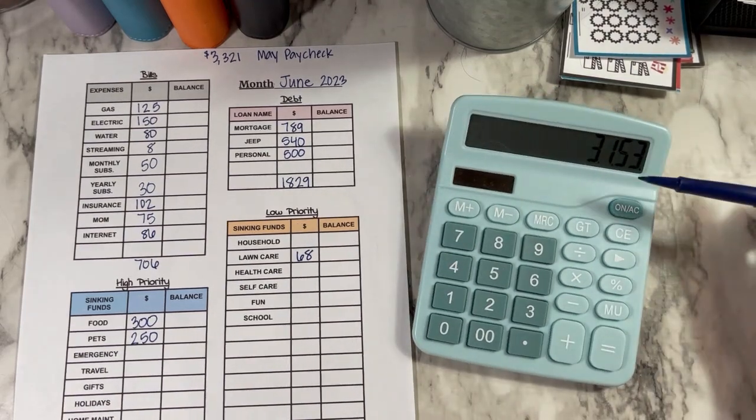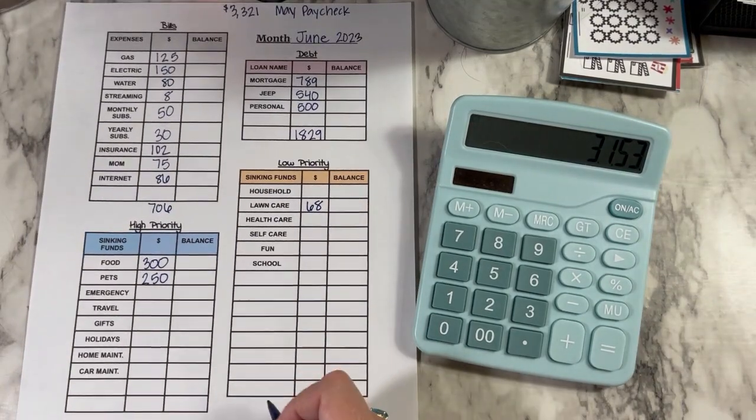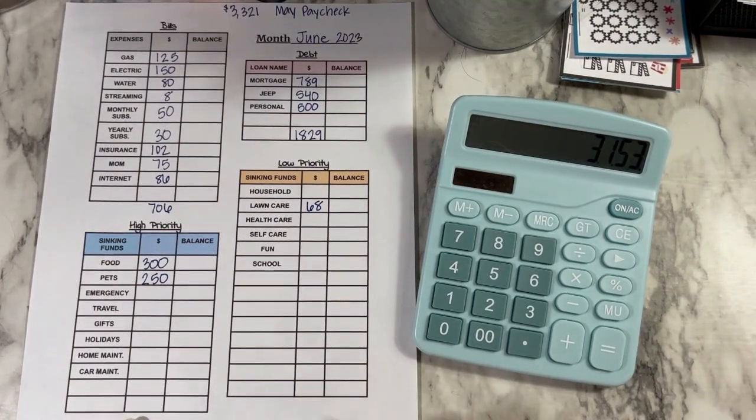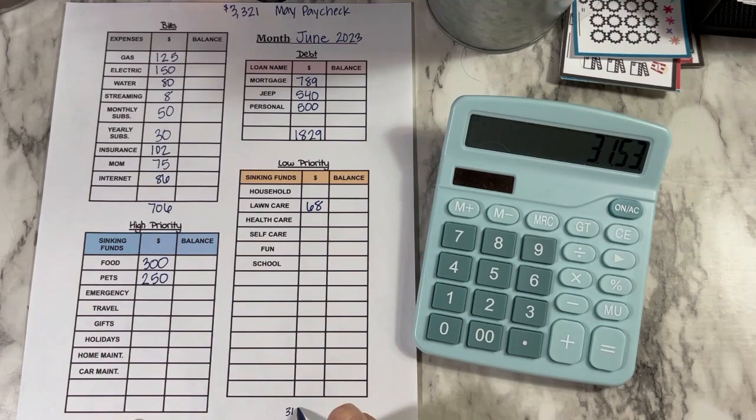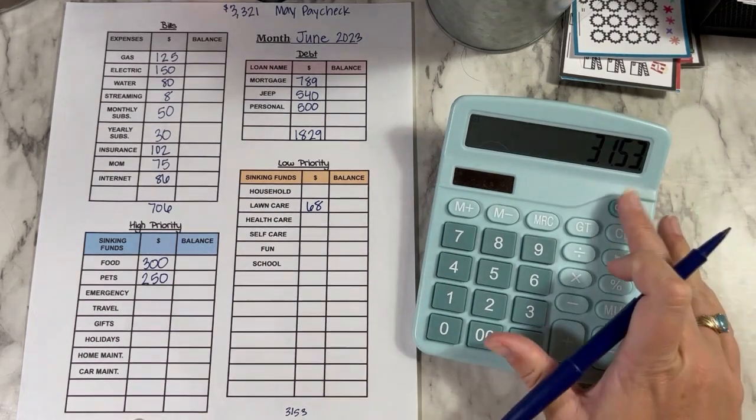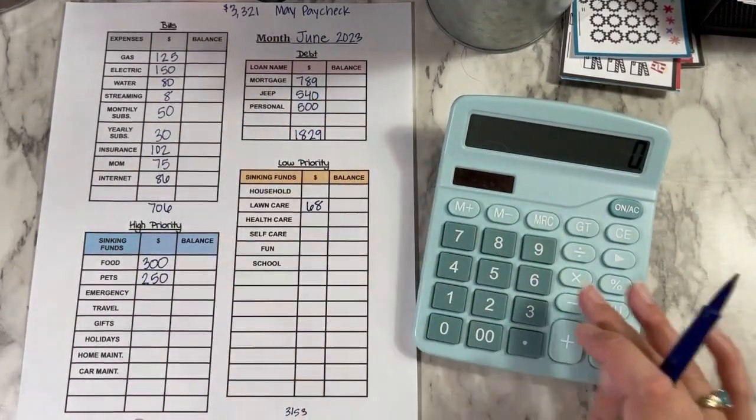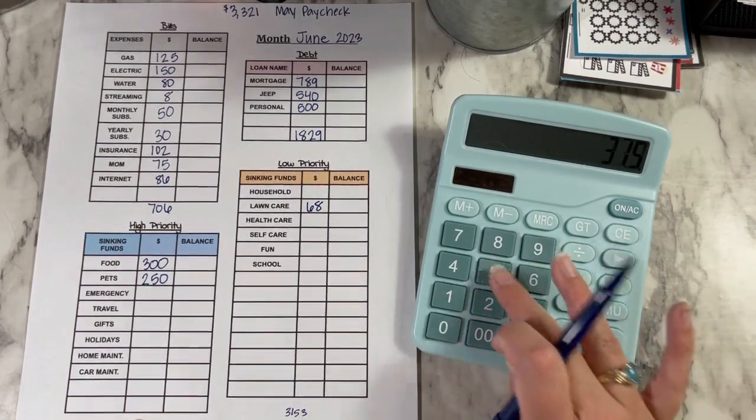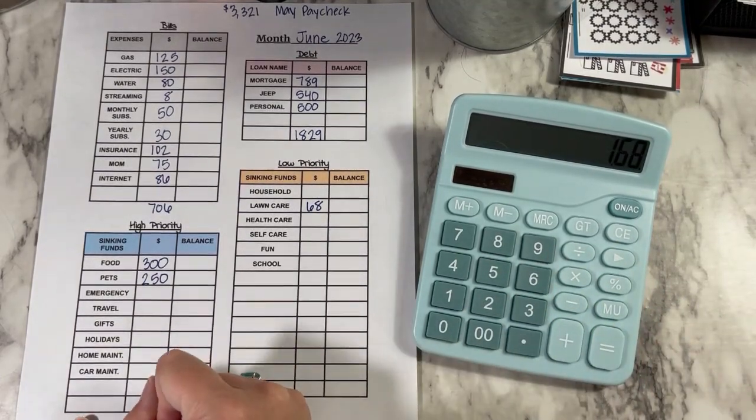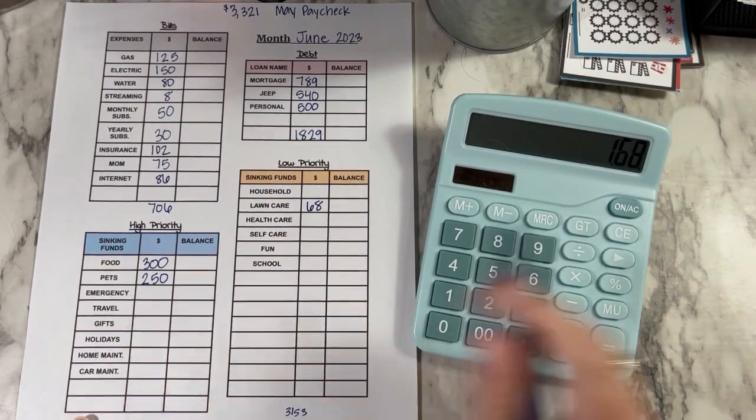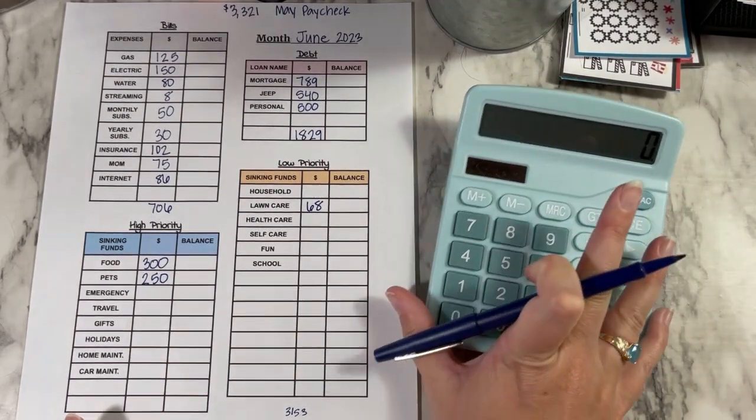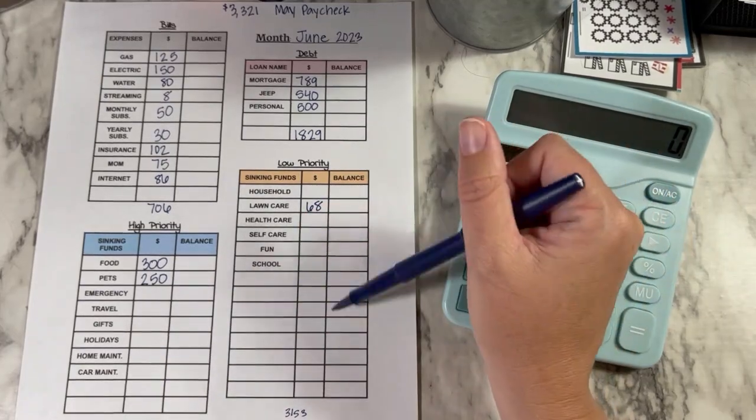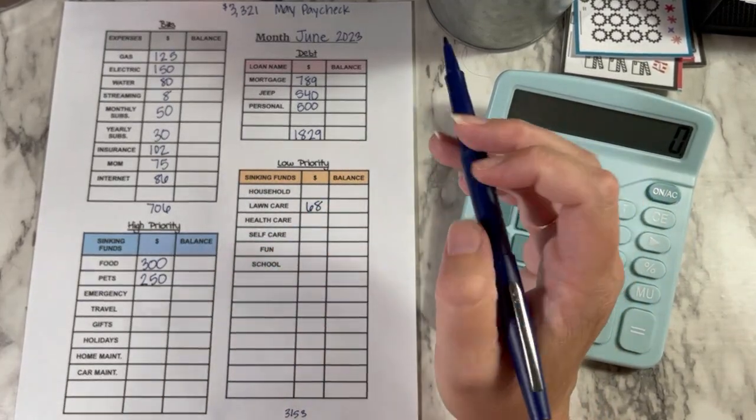So we're going to add up all the totals, including these three and see how much we have left over. So that was $3,153. So I like to just write it kind of down here at the bottom, just so I can kind of see. And then I take that away from my total, which was $3,321. And we have 168 left over.